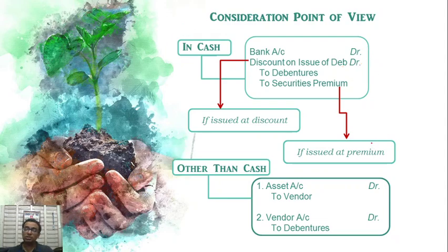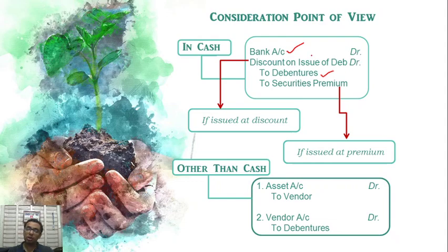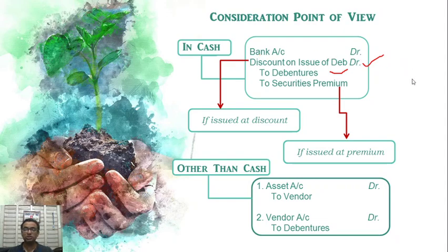You can see the share capital treatment: Bank account Dr., to Share Capital. For debentures: Bank account Dr., to Debentures. If there is a discount on issue: Bank account Dr., Discount on issue of debenture account Dr., to Debentures.